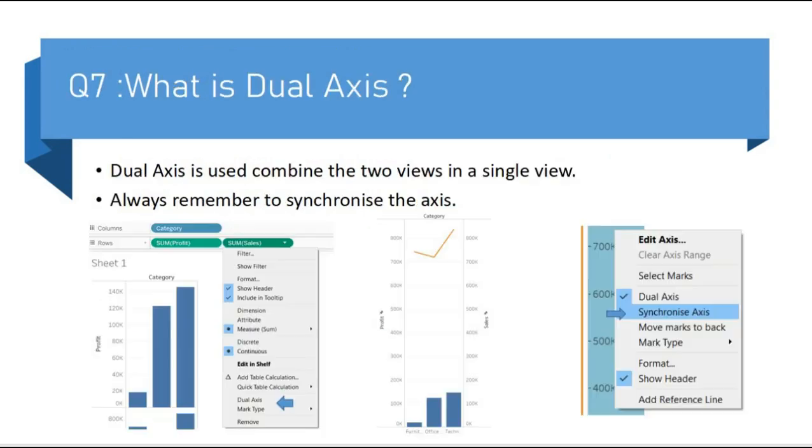The next question is what is dual axis. Dual axis is used to combine two views in a single view. Suppose you have data of profit and sales and you want to see them both in a single view, so for this purpose we use dual axis.